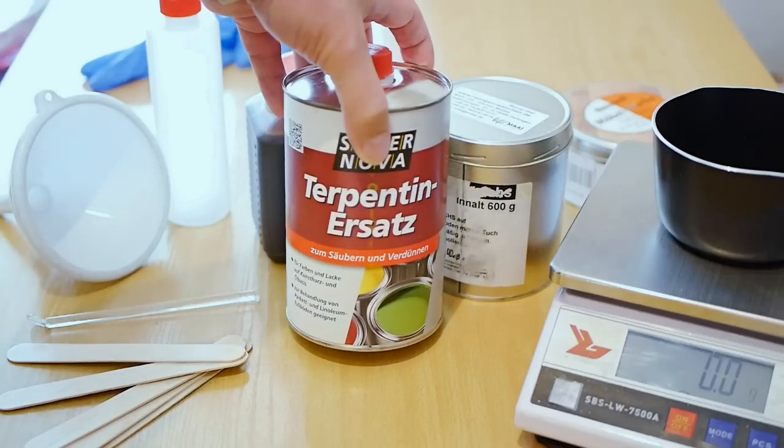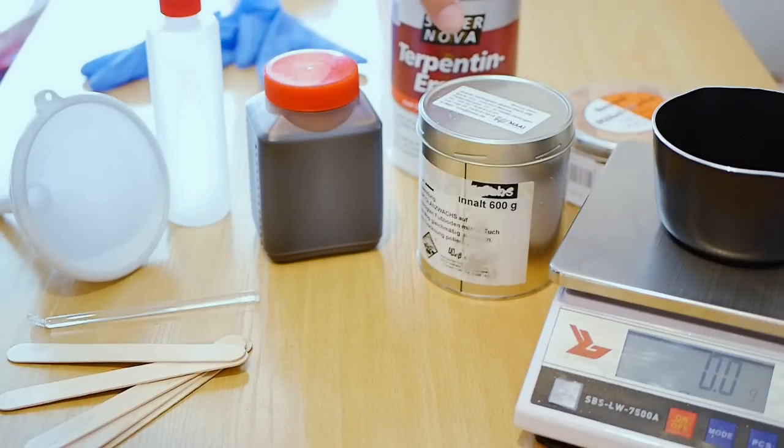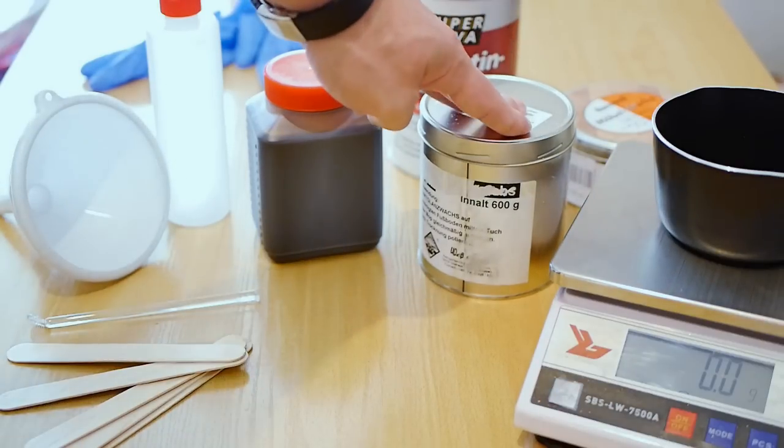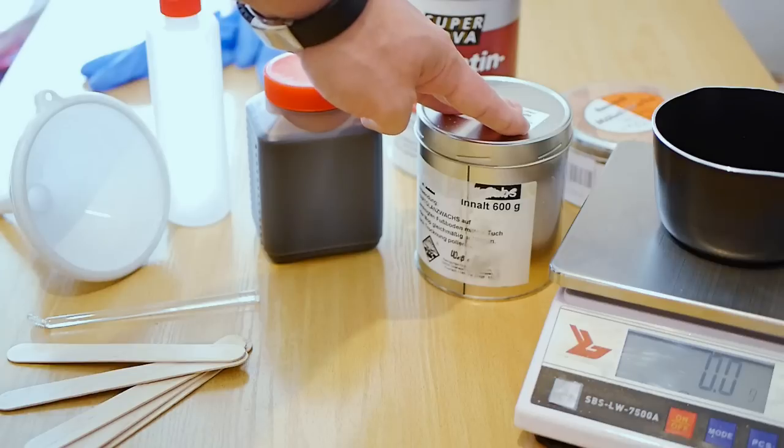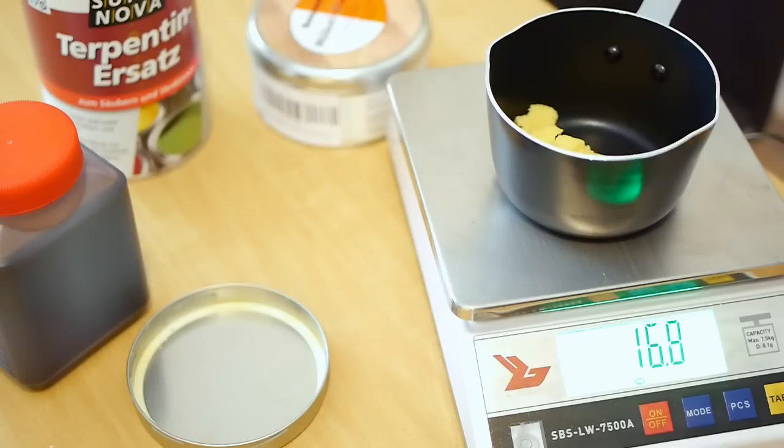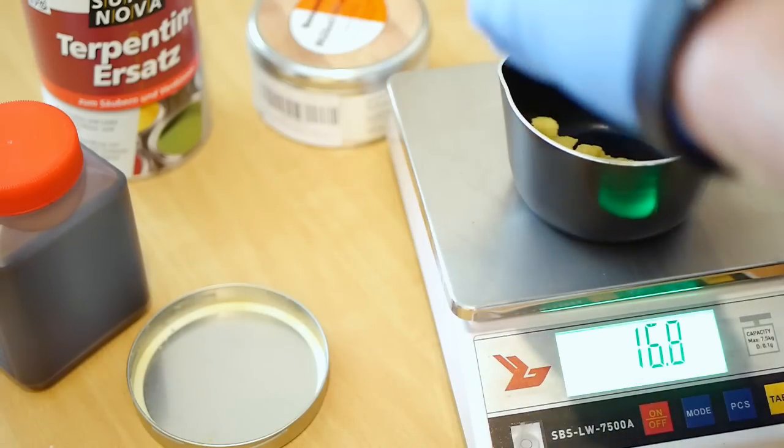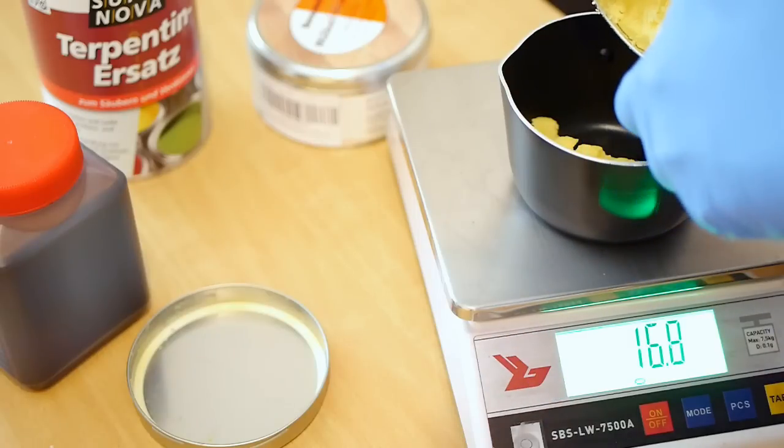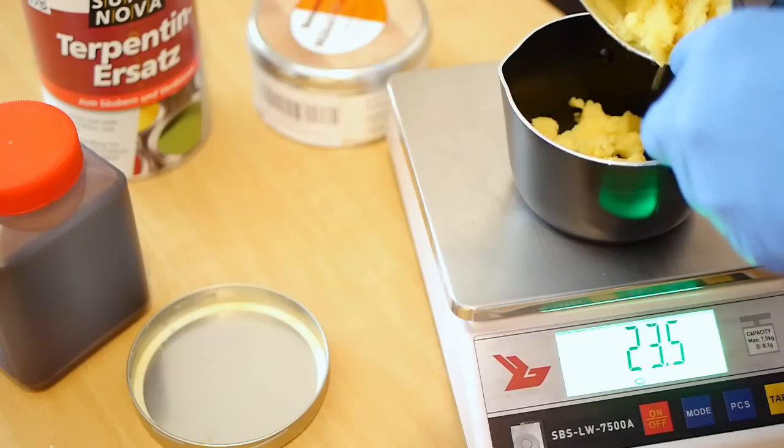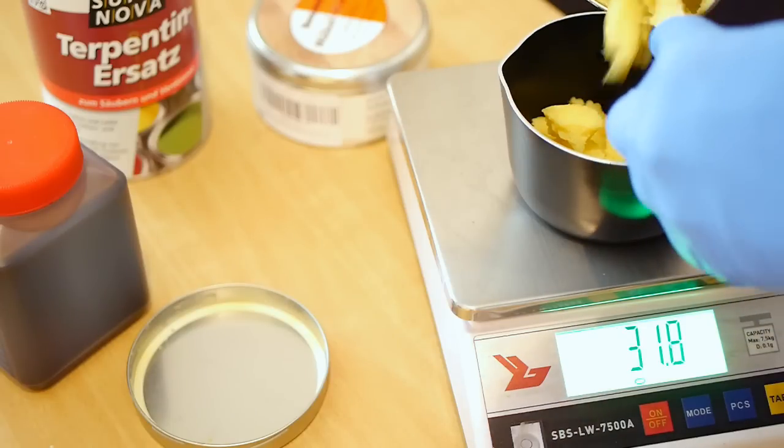Last but not least we need mineral spirits and I do the same 45-45-10 mix like we know from the United States. I will start with 45 percent of my floor wax, in my case 90 grams, then I will add 90 grams of the Tectool 506EH and 20 grams of the mineral spirits.